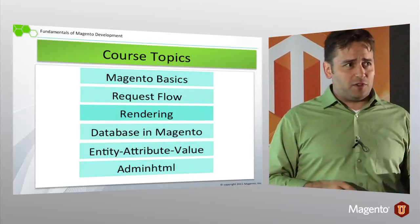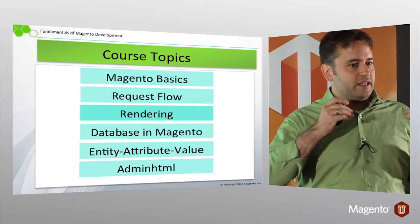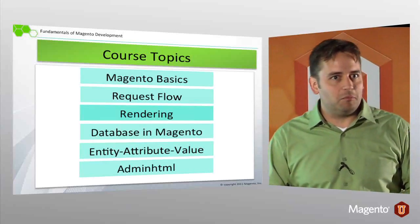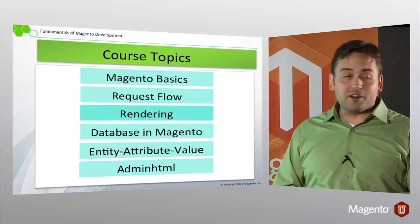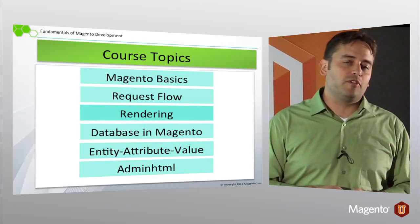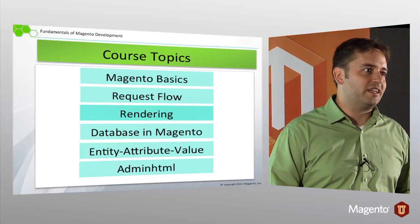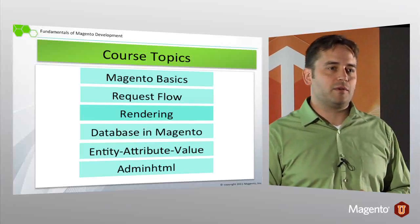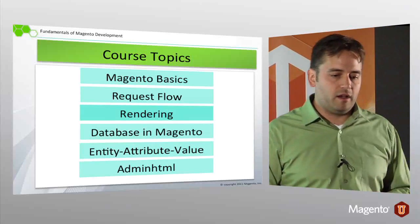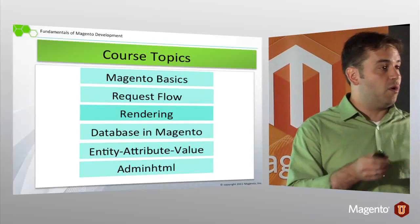We move on to the request flow — basically how Magento receives a request, gets it into the hands of the correct module, and gets the output generated, which is the rendering. Then the big ones are database and EAV. Magento has this often-feared EAV modeling in place that allows for complex entity representation. We'll tackle these together because Magento is a fantastic framework that does a lot of the work for you, including some of the stuff in the ORM.